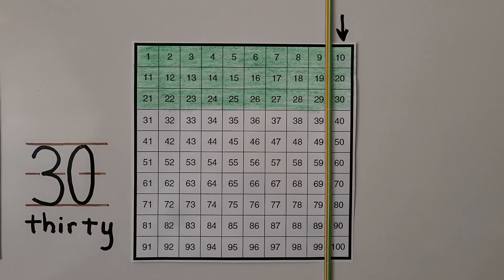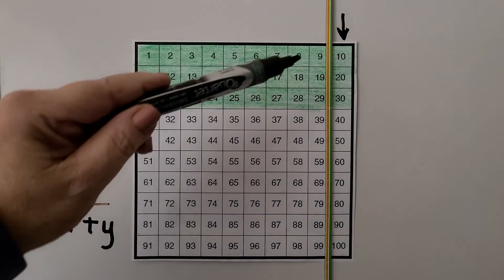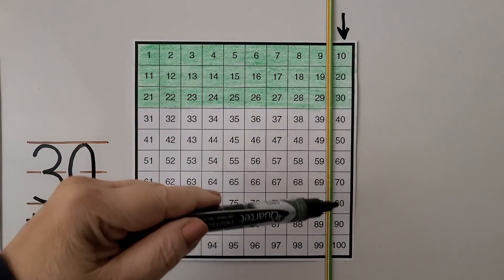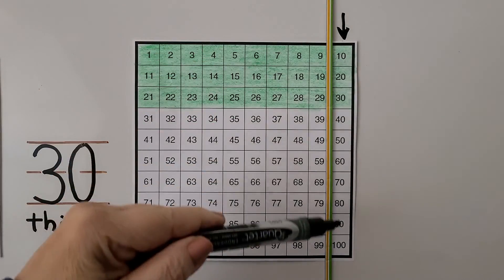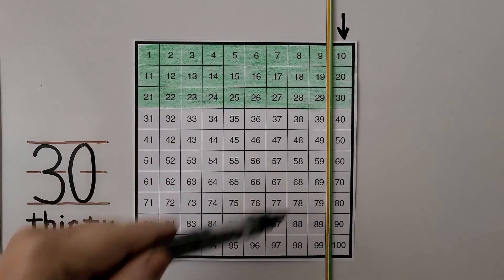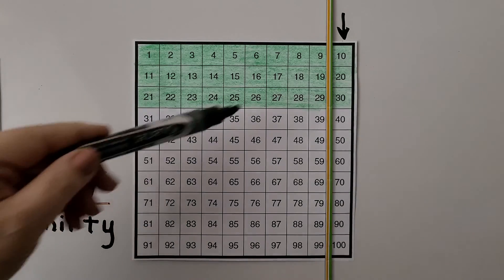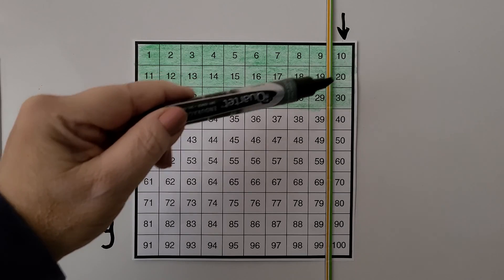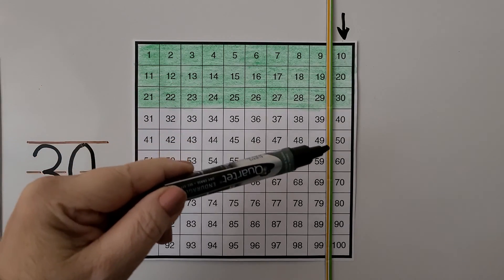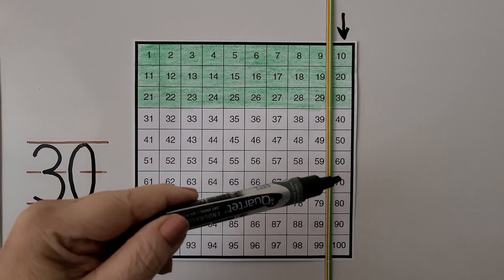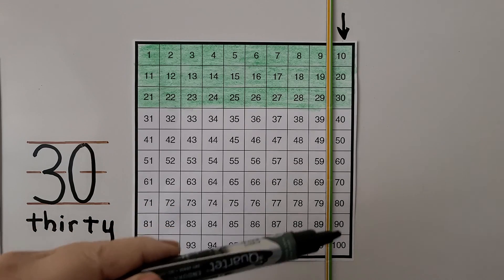So be careful as you skip count by tens. We are only counting these numbers to skip count by tens. We are skipping all of these numbers. And we are only saying 10, 20, 30, 40, 50, 60, 70, 80, 90, 100.